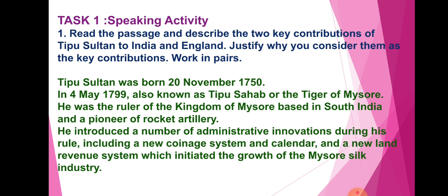Tipu Sultan was born on 20 November 1750 and died on 4th May 1799, also known as Tipu Sultan Sahab or the Tiger of Mysore. He was the ruler of the Kingdom of Mysore based in South India and a pioneer of rocket artillery. He introduced a number of administrative innovations during his rule, including a new coinage system and calendars, and a new land revenue system which initiated the growth of Mysore's silk industry.